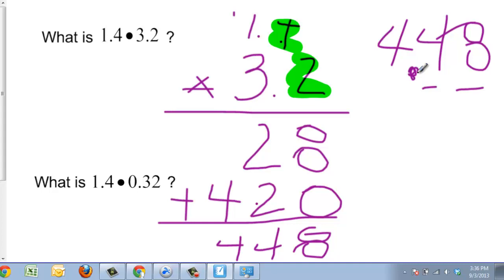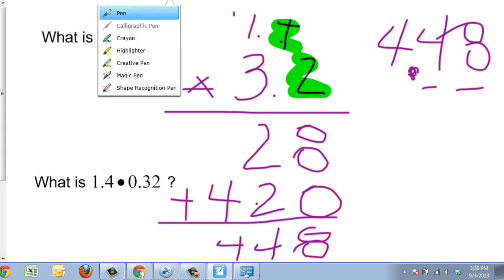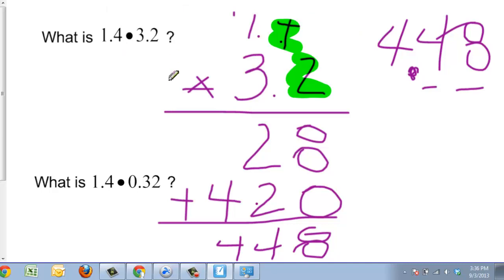Now for the second problem, I am going to have the same numbers that I multiplied together. So I do not need to re-multiply this out. However, I do need my decimal points in a different place.